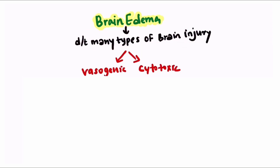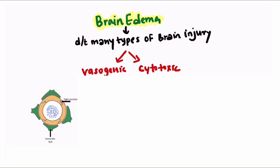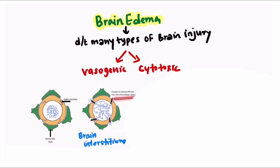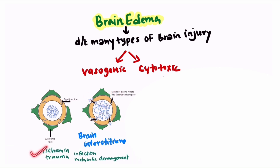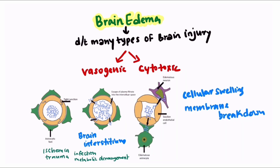Brain edema can result from many different types of brain injuries. Brain edema can be of two types: vasogenic brain edema and cytotoxic brain edema. Normally, in the blood-brain barrier there are tight junctions between the endothelial cells, and there are astrocytes around it. In vasogenic edema, due to some insult, there is loss of these tight junctions and leakage of plasma filtrate into the brain interstitium. Vasogenic edema can be seen in ischemia, trauma, infections, and metabolic derangement.